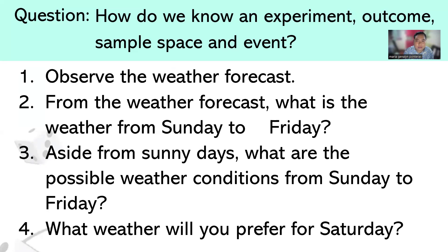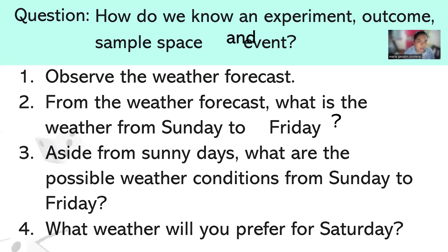The outcome is the prediction we have — the prediction of weather on Saturday. The sample space is the choices: sun, cloudy, rain — whatever weather we have in our country. And the event is the weather that we want, the weather we prefer on that day. To understand this better, let's have another activity.